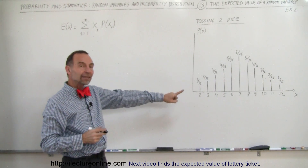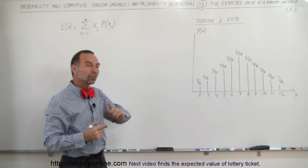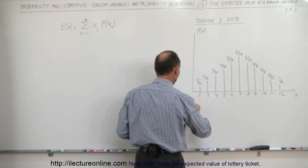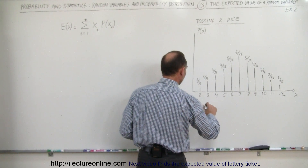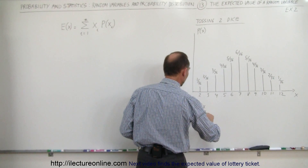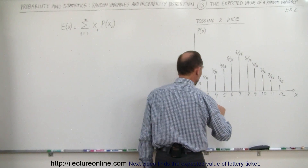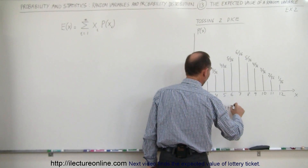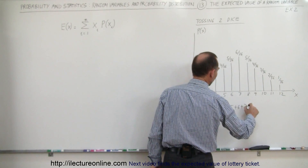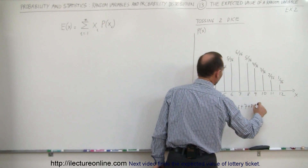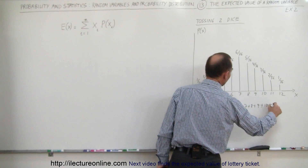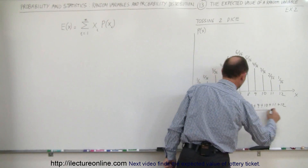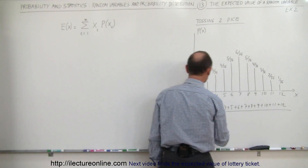And if we were to calculate the mean of this, what will we get? Well, the mean value for x — the average value — would be equal to the sum of all the x's divided by the number that we have. So this would be 2 plus 3 plus 4 plus 5 plus 6 plus 7 plus 8 plus 9 plus 10 plus 11 plus 12, and the whole thing divided by — well, how many numbers do we have?